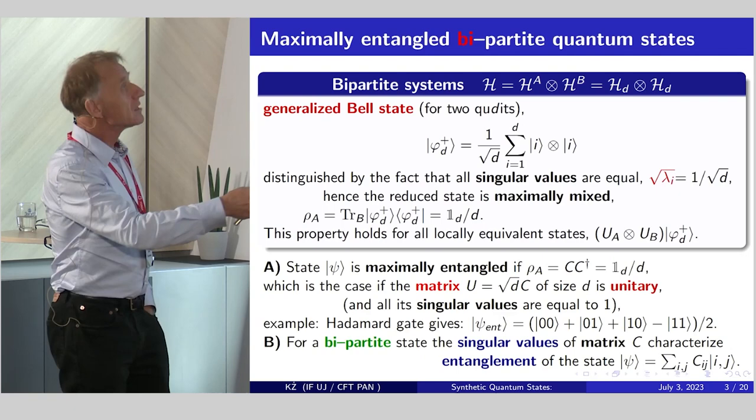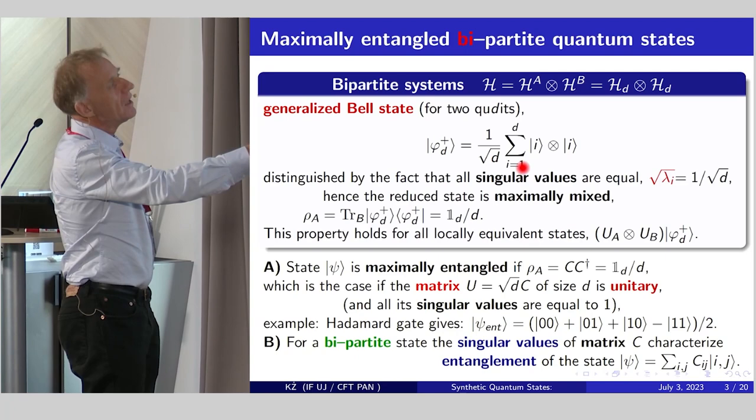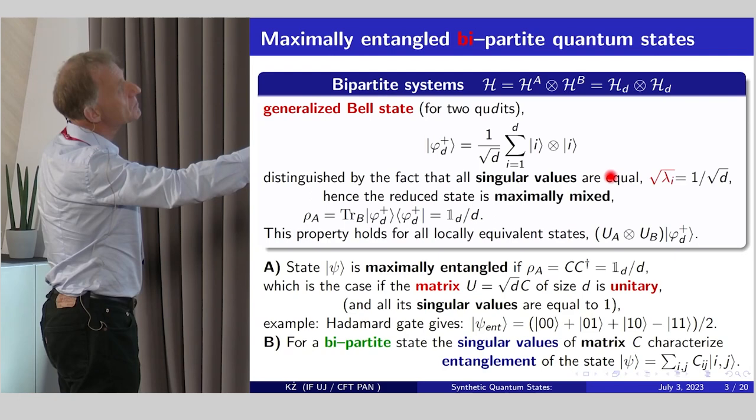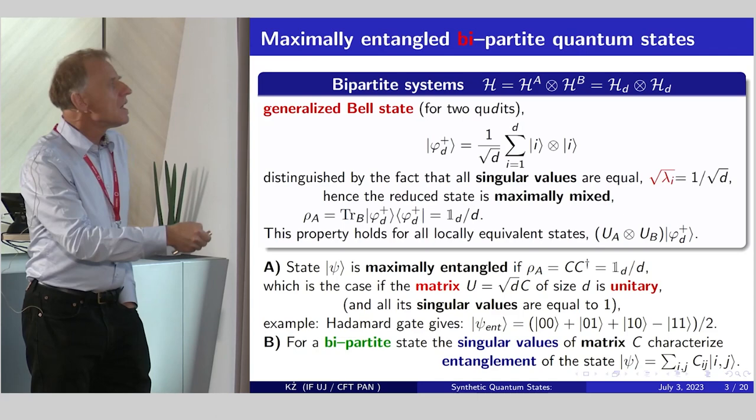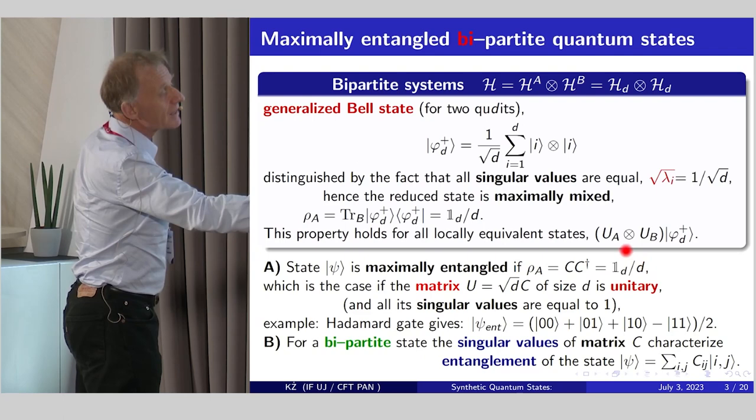If there is only one non-zero singular value lambda, then the state is separable. In the other cases, entangled. And we usually quantify entanglement with such a simple formula. Entropy of entanglement is just standard von Neumann entropy of partial trace, or the Shannon entropy of the vector lambda. This approach works also for higher dimensional systems, let's say two q-dits.